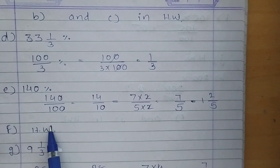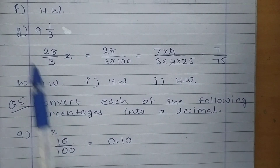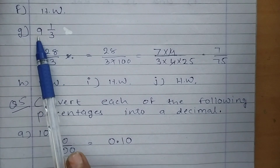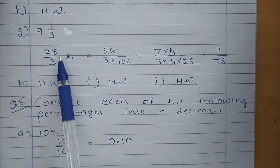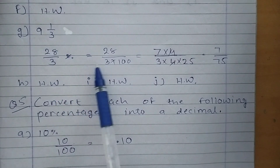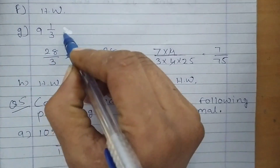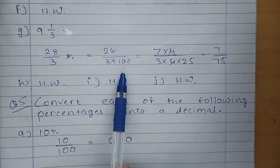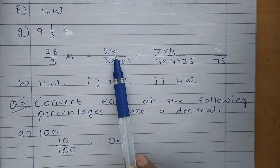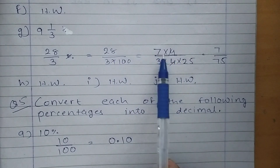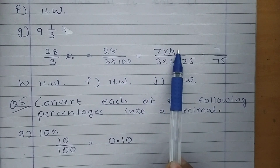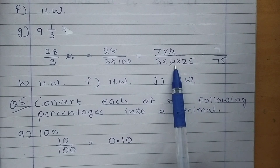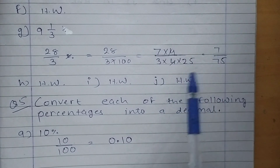Now students, F you have to do in your homework. Next, Part G: 9 and 1 upon 3 percent. First of all convert into improper fraction: 9 threes are 27, 27 plus 1 is 28, so 28 upon 3. Write down as it is in denominator 3 and divide by 100. Now take factors of 28: 7 multiply 4. In the numerator 4 is there, so to cancel the 4 take factors of 100 in that manner: 25 fours are 100. So 4 and 4 cancel. 7 as it is, 25 threes are 75. So the answer is 7 upon 75.